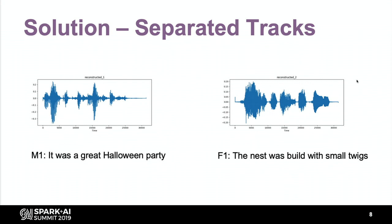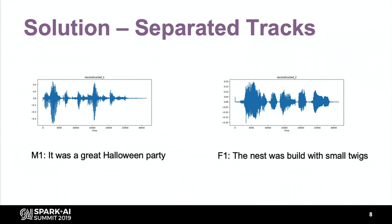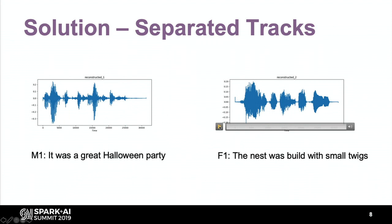I have worked for a hearing aid company in the past year, but I'm trying to expand the use case. These two sentences have been separated with TensorFlow. He's saying 'It was a great Halloween party,' and you might hear a little artifact of the female in the background—so it's not 100% perfect, but it's actually good enough. I'm pretty impressed. Here's the female—you can clearly hear her, with the male audible slightly in the background. We want to move in that direction; at the moment it works in a lab, but it should preferably work in the field.